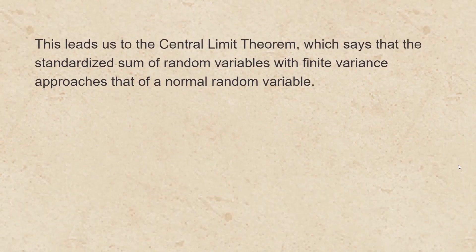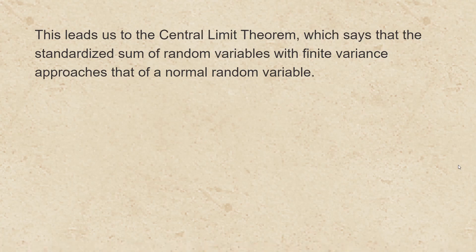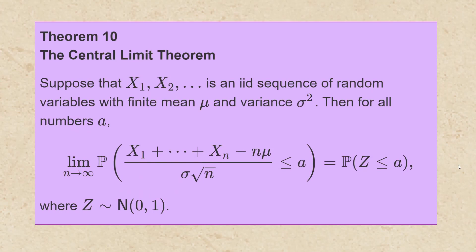Now this leads us to the central limit theorem, which says that the standardized sum of random variables with finite variance approaches that of a normal random variable. To be precise, the central limit theorem says the following. Suppose that x sub 1, x sub 2, etc. is an iid sequence of random variables with finite mean mu and variance sigma squared. Then for all numbers a, the limit as n goes to infinity of the probability that the sum of the x sub i minus n times mu, divided by sigma times square root of n, is less than or equal to a will equal the probability that z is less than or equal to a, where z is a standard normal random variable.